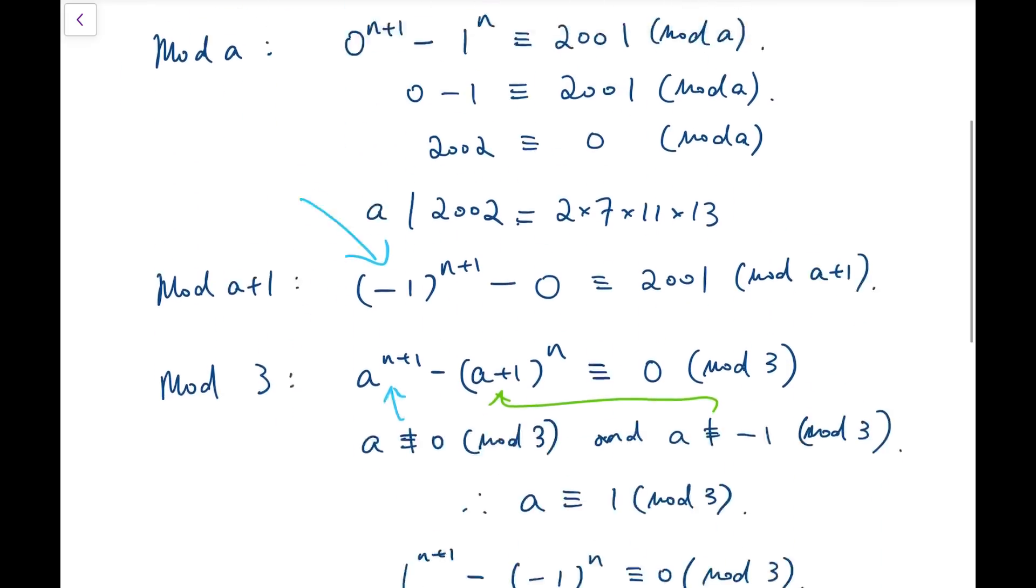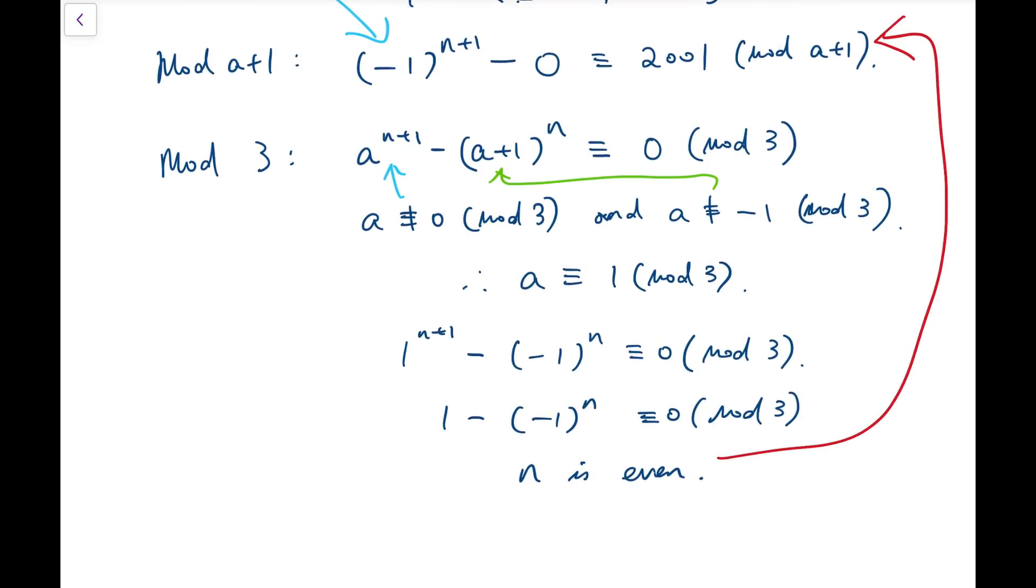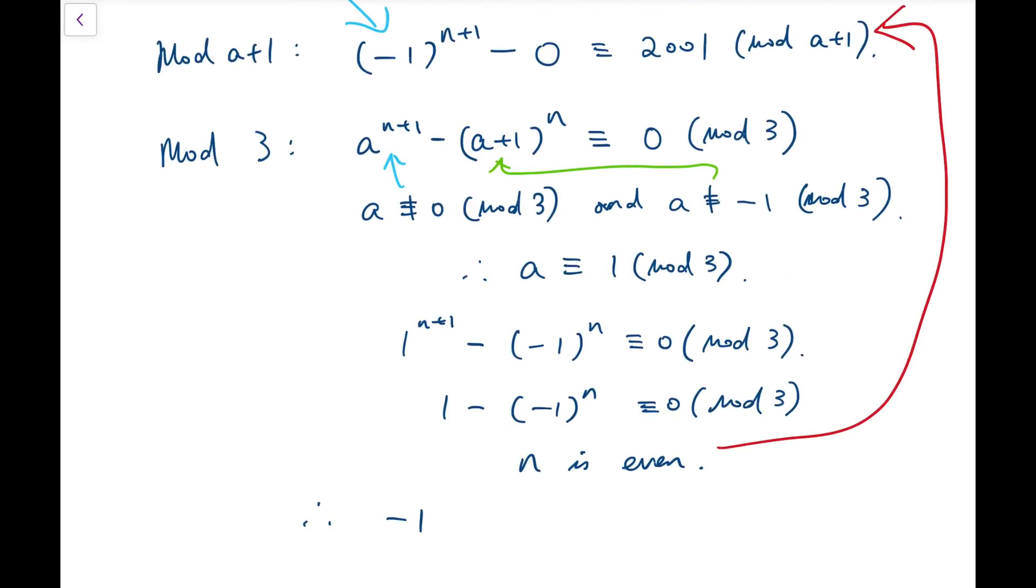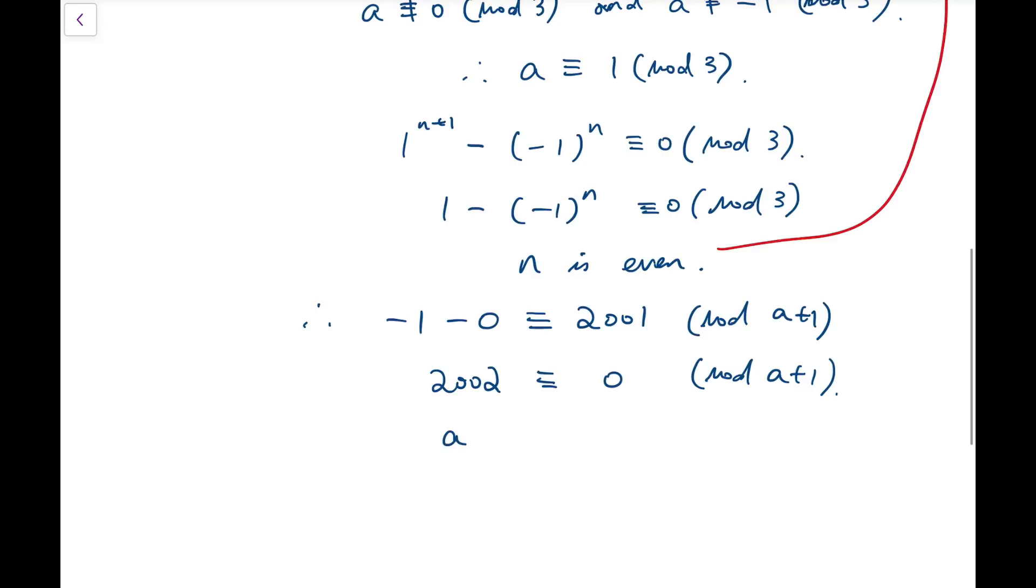So we can go back, go back to this equation, put it back, and see that minus 1, now because n is even, so n plus 1 is odd, so minus 1 to that power should have to be minus 1. So minus 1 equals 0, minus 0 is congruent to 2001 mod a plus 1, and 2002 is again congruent to 0 mod a plus 1. Now that means a plus 1 divides 2002 as well.